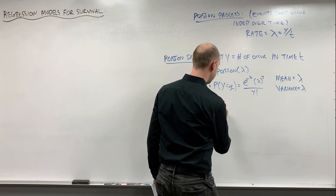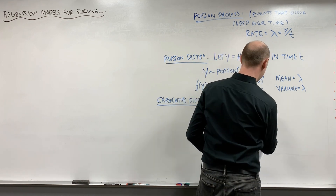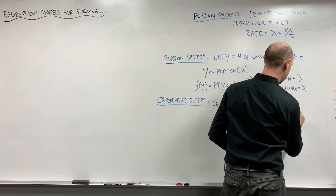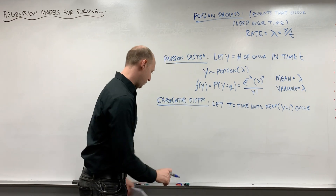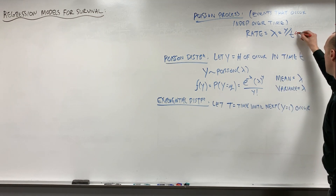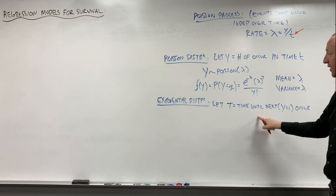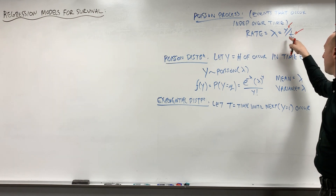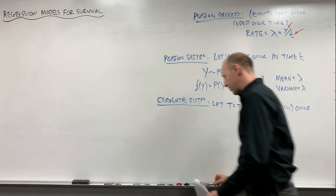For the exponential distribution, we let t be the time until the next occurrence — where y equals 1. So whereas the Poisson fixes the time and asks how often the event occurs given an amount of time, the exponential fixes y being 1 and asks how much time goes by until an event occurs. These two are the ways you can get at the rate.